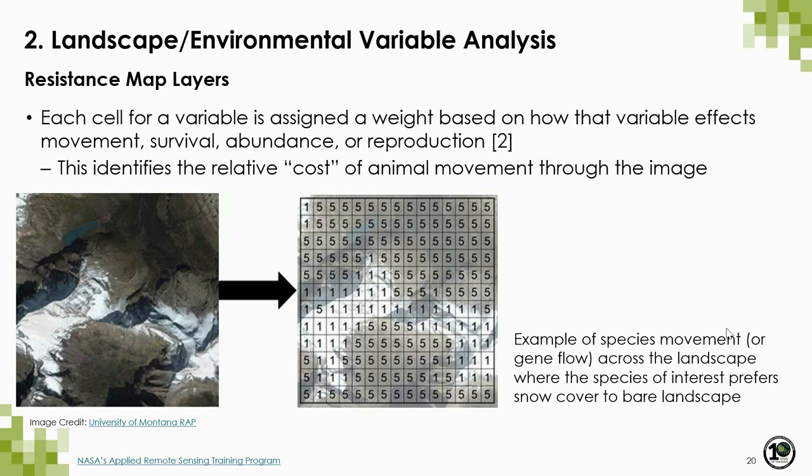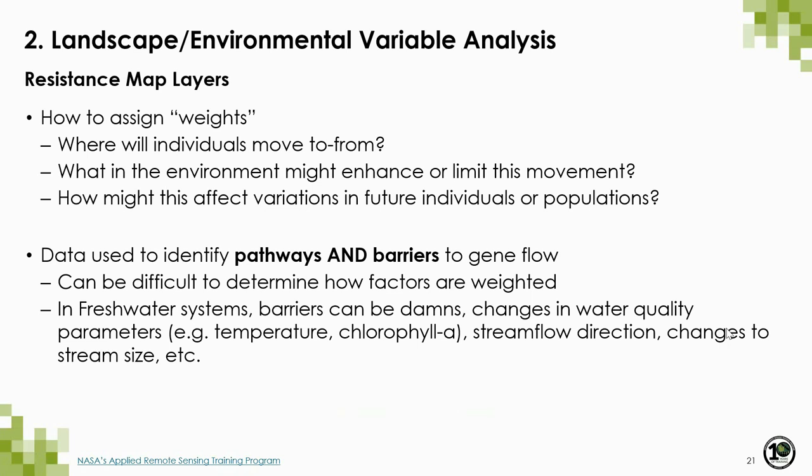Within these steps, there may be a lot of questions or uncertainties with the assignment of weights. This can be a somewhat subjective process that can be modeled and tested with effectiveness using in-situ data. These parameters can be modified as the researcher moves through the process. Questions may include: where will individuals move to and from? What in the environment might enhance or limit this movement? How might this affect variations in future individuals or populations? And what are the pathways and barriers in freshwater systems, such as dams, changes in water quality parameters, stream flow directions, or changes to stream size?